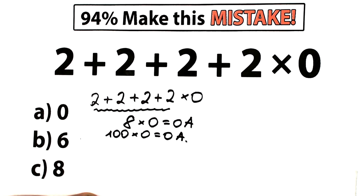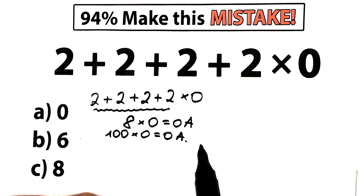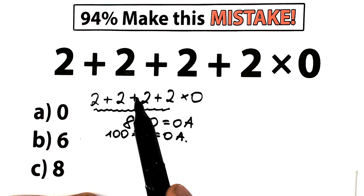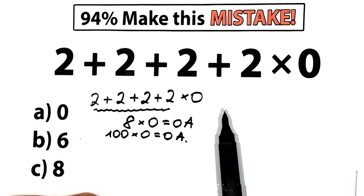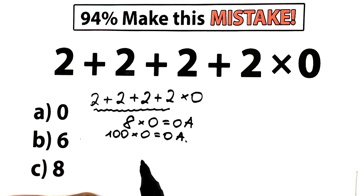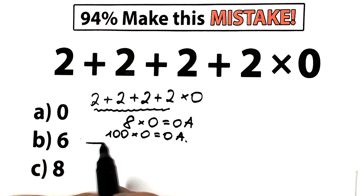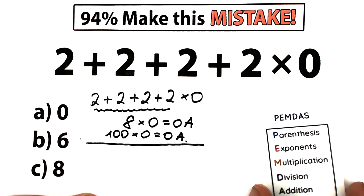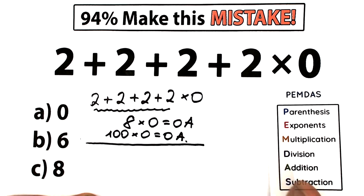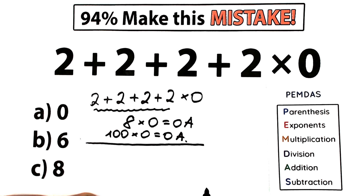You should understand that in math we need to know the order of operations — the correct order to do this problem. Because right here we have addition and multiplication, and whatever order of operation we select is going to create a different answer. For this question, let's look at PEMDAS, which is the most popular order of operations in the world. All internet libraries, scientific, and graphing calculators work according to PEMDAS.